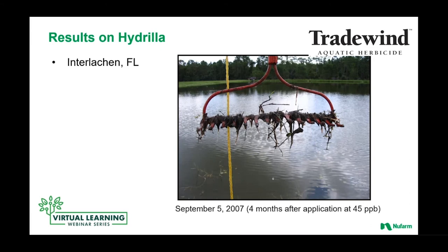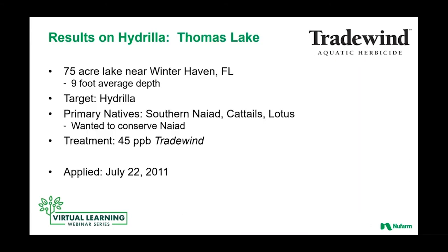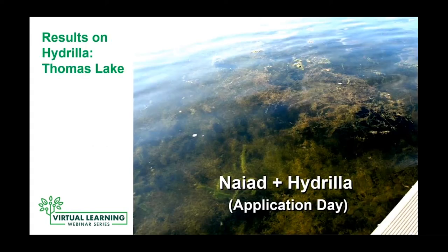Moving from retention ponds to initial lake applications, the Thomas Lake example really pulled together the characteristics of Tradewind on both control and selectivity. This was a 75-acre lake with a nine-foot average depth. A single application of Tradewind at 45 parts per billion was made on July 22nd. The goal was to also monitor cattail and lotus along the way to see exactly what happened to those species in addition to targeting the hydrilla and niad.